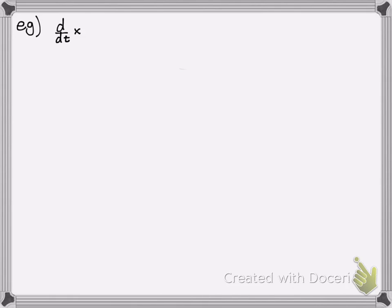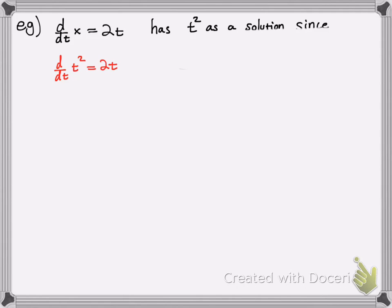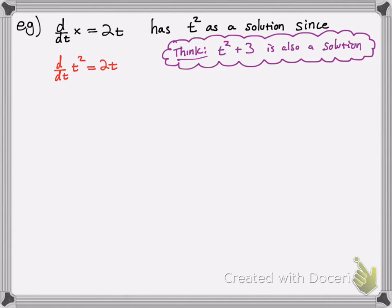Let's look at an example. We have d/dt of x equals 2t. What would be the solution to this differential equation? Well, t squared could be a solution, since d/dt of t squared gives 2t. But that's not the only solution. Using your knowledge of calculus and anti-derivatives, t squared plus 3 could also be a solution — take the derivative, you get 2t, and the derivative of a constant is 0.